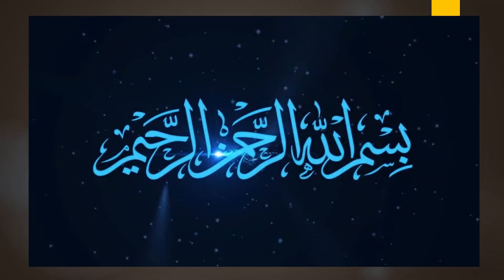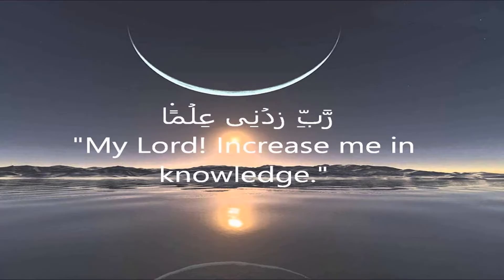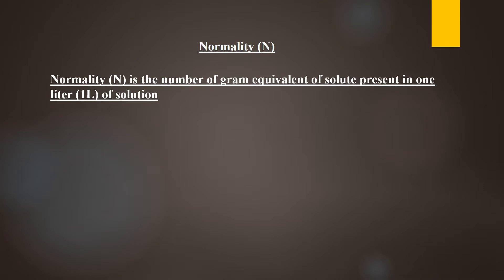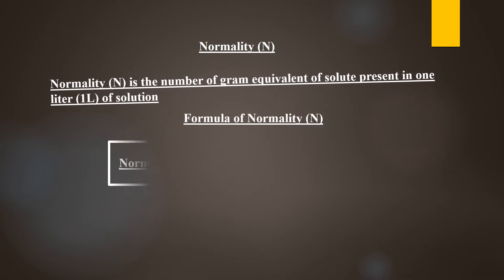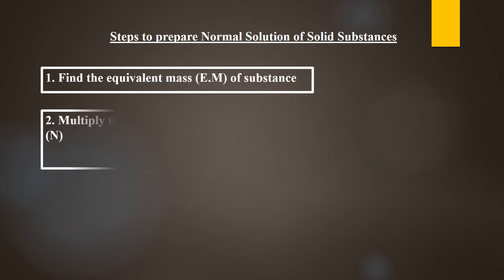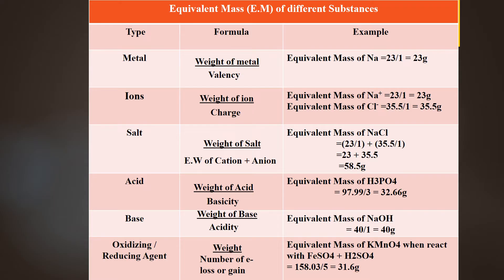In the previous video, we have discussed what is normality and the formulas of normality. I have also discussed that for preparation of normal solution of any solid substance, always follow three steps. In the previous videos, I have also discussed how we can find equivalent mass of metals, ions, salts, acids, bases, and oxidizing or reducing agents.